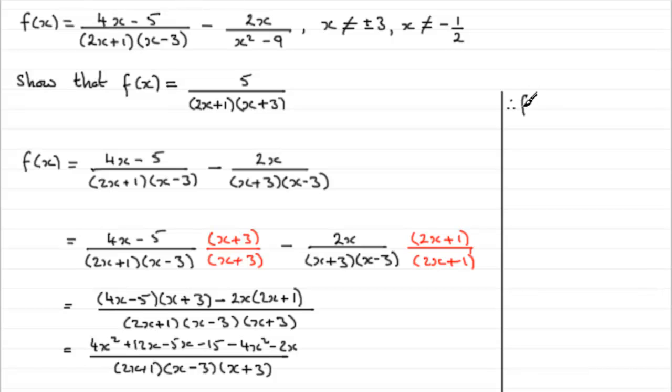Therefore f of x equals, so if you clean up the top here those two 4x squareds cancel out. And 12x minus 5x minus another 2x leaves you with 5x. So let's just put 5x there.